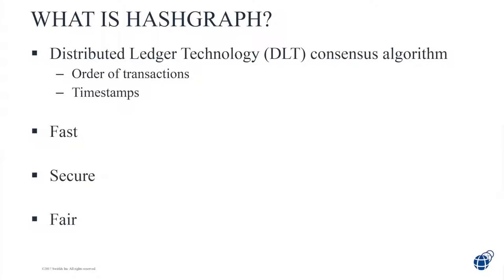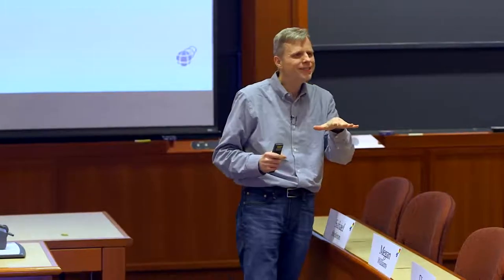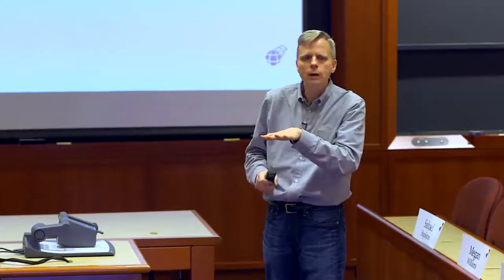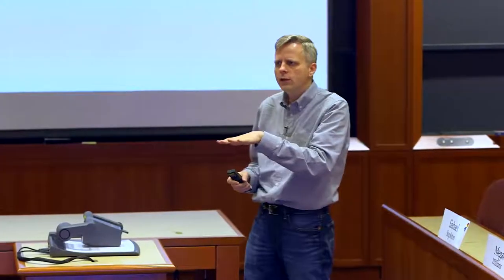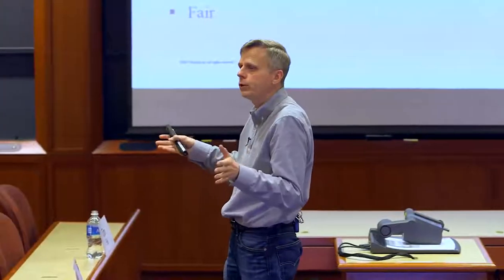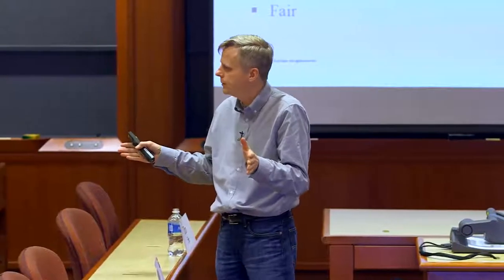So what is Hashgraph? Hashgraph is a distributed ledger technology — a consensus algorithm that you can use for a DLT. DLTs are systems where a group of computers are sharing some information and we don't trust each other. You don't particularly trust any given computer in the group to not corrupt the data, change it, lie about it, or try to stop us from coming to consensus. But we do trust the group as a whole to not have too many bad players.